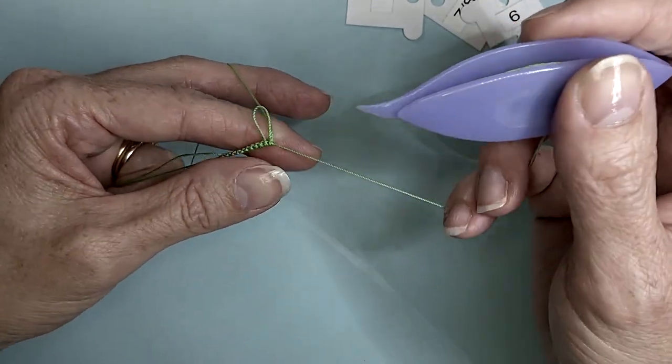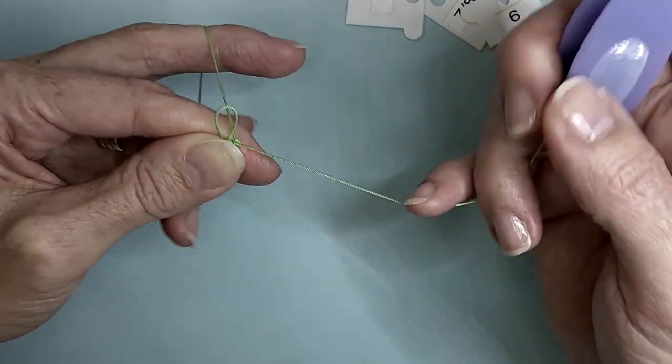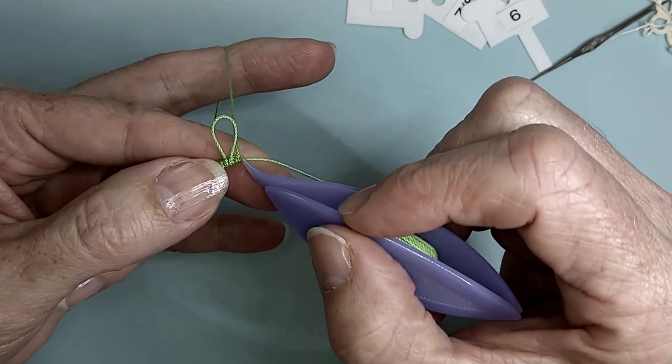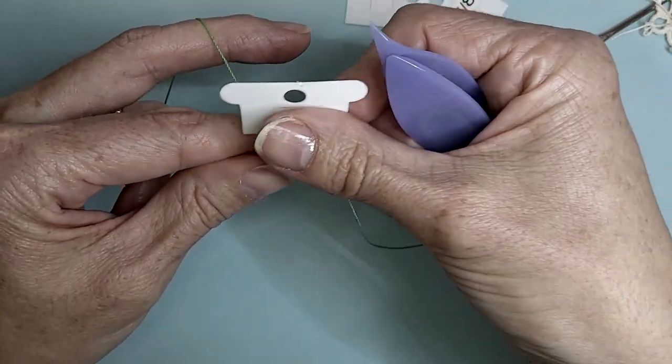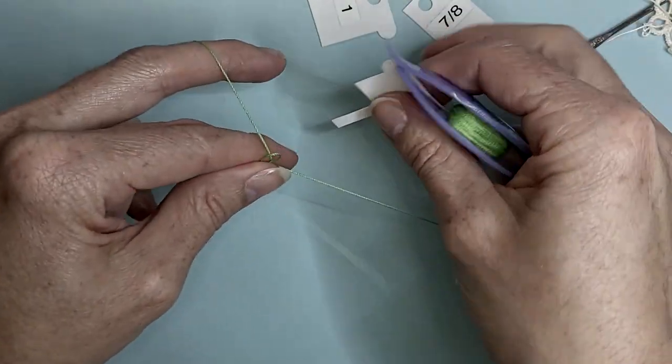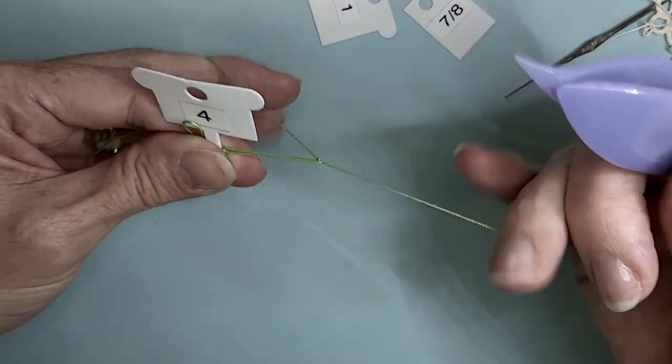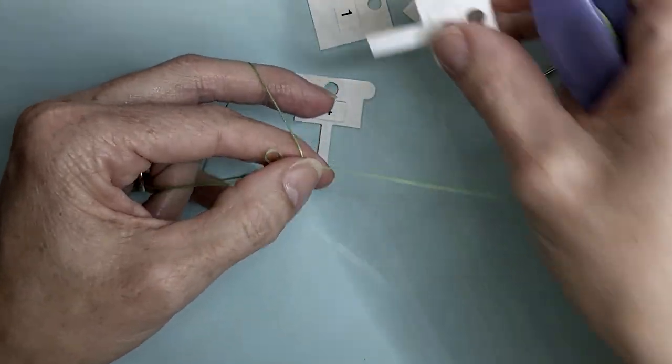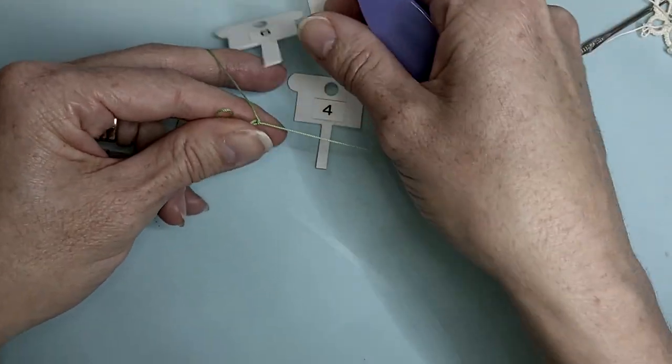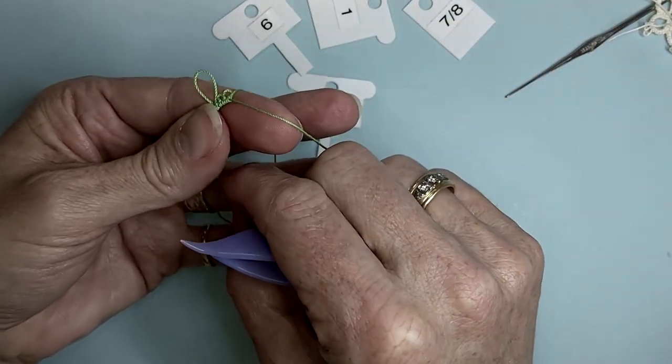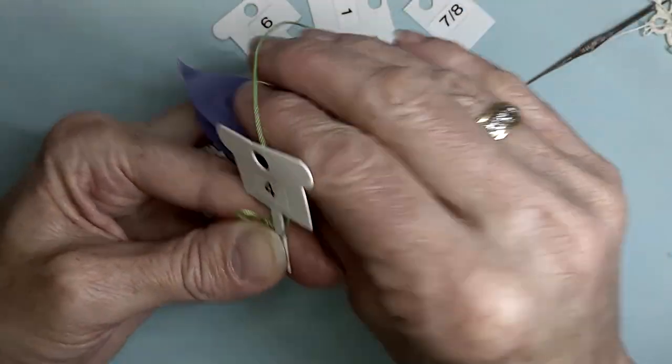After working our long picot, work one more double stitch. That gives us a count of two. Now we're working one. We're working a picot and one, picot and one, a picot and two.